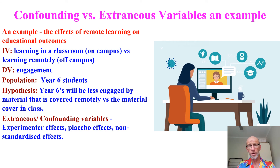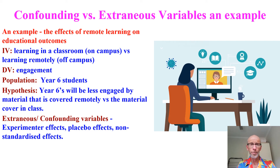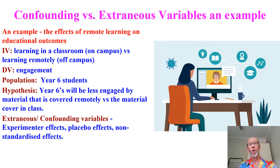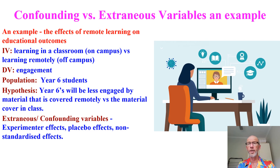Likewise, weather, room temperature, sound quality, and lighting — all of these might have been pointed out after the fact as things that weren't controlled. So now they're confounding variables. Hope that helps.